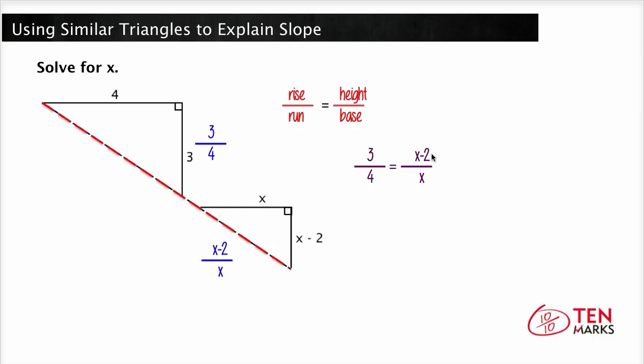3 fourths equal x minus 2 over x. To solve for x, we should just cross multiply, and we get 3x equals 4 times the quantity of x minus 2. Distribute the 4, and we get 3x equals 4x minus 8. And then we can isolate the variable by subtracting 4x on both sides. We get negative x equals negative 8, which is x equals 8.